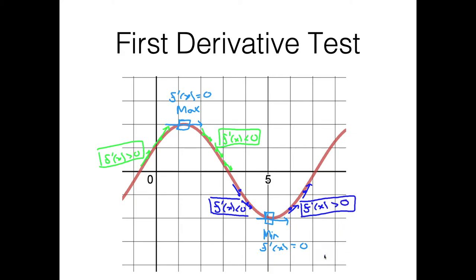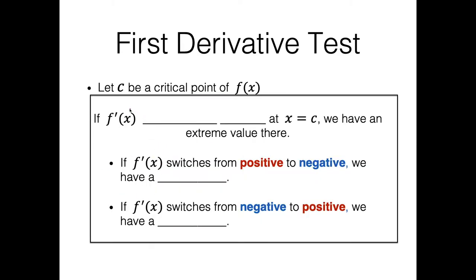Notice how the first derivative is switching signs — going from increasing to decreasing around the maximum, and from decreasing to increasing around the minimum. With this test, we're taking advantage of how extreme values occur on these hill-like shapes. If f prime of x switches signs at some critical point, we know for a fact that we'll have an extreme value.